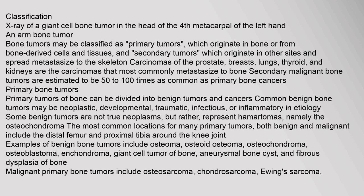Examples of benign bone tumors include osteoma, osteoid osteoma, osteochondroma, osteoblastoma, enchondroma, giant cell tumor of bone, aneurysmal bone cyst, and fibrous dysplasia of bone.